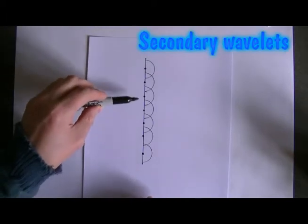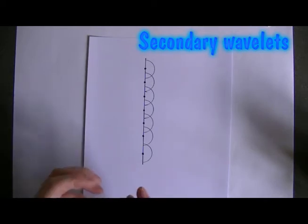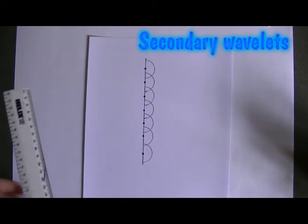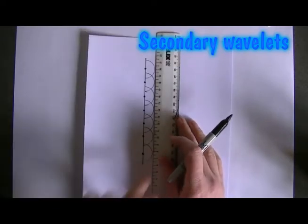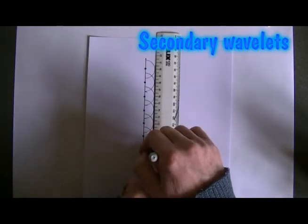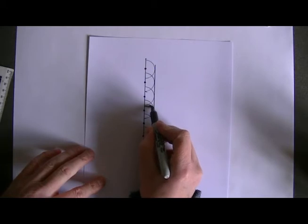He suggested that each point on a wave front — and there are an infinite number of points on a wave front — is a source of new circular waves, and he called these new waves secondary wavelets. These wavelets travel out from each point on the wave, and where they meet up, or where the tangent to them is, is where the new wave front would be. So I can draw in the new wave front here as the tangent, and the wave has moved from there to there.